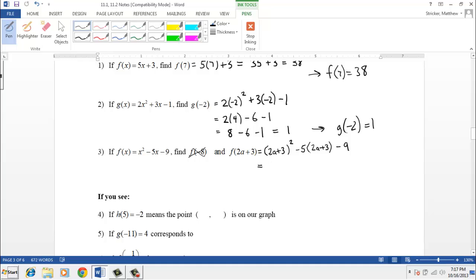And then we can continue on remembering that 2a plus 3 squared means 2a plus 3 times 2a plus 3. We have minus 9 and now we can do some simplifying. We have 4a squared plus 6a plus 6a plus 9 minus 10a minus 15 minus 9. And now we can combine like terms. We only have the 4a squared term, but then we have a 6a, a 6a, which makes 12a.